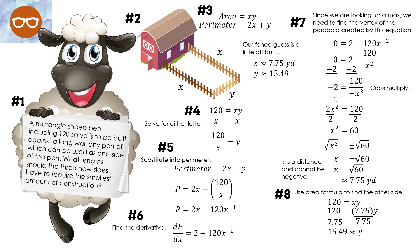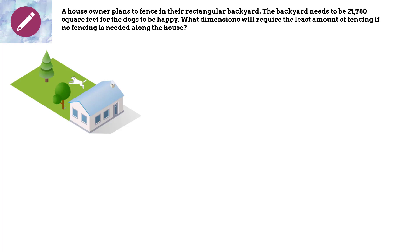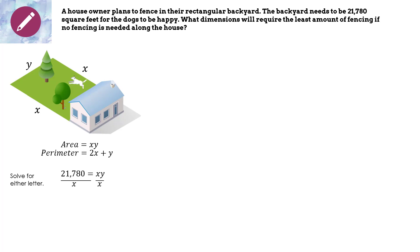Let's look at an example. A homeowner plans to fence in their rectangular backyard. The backyard needs to be 21,780 feet squared for the dogs to be happy. What dimensions will require the least amount of fencing if no fencing is needed along the house? Number one, we draw the picture — here we have the house, the backyard, and the happy dog — and label variables. Our two formulas are area equals x times y, and perimeter equals 2x plus y. The area needs to be 21,780 square feet, so I solve for y: 21,780 over x equals y.